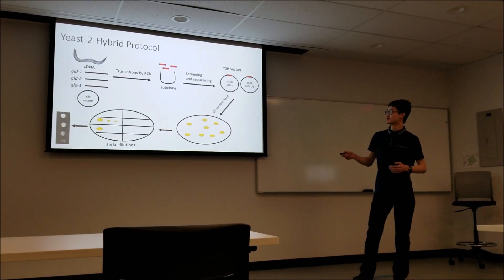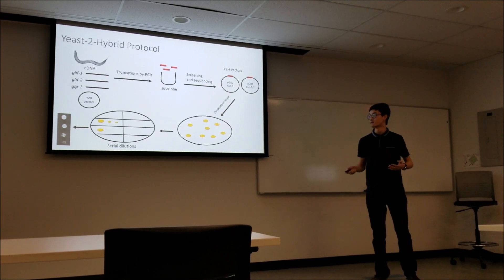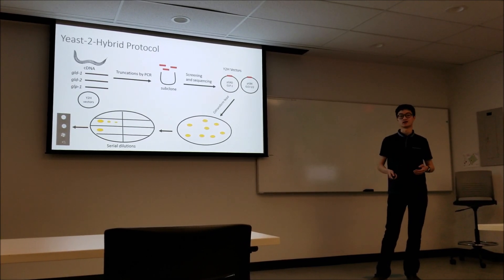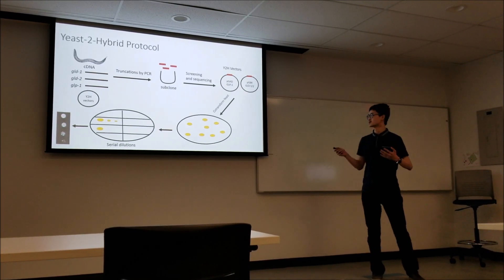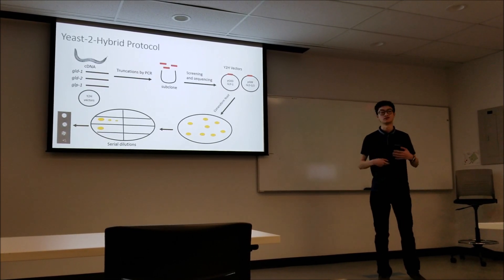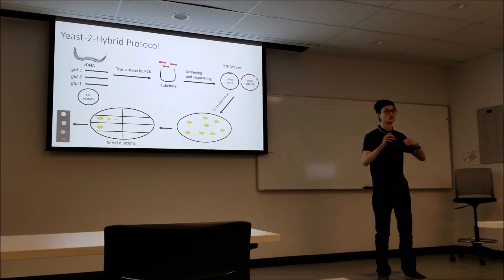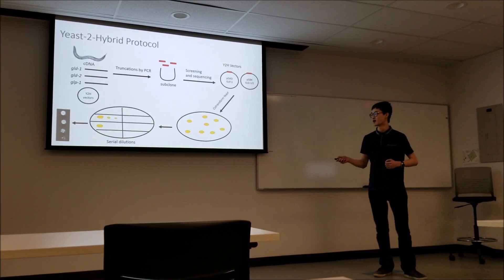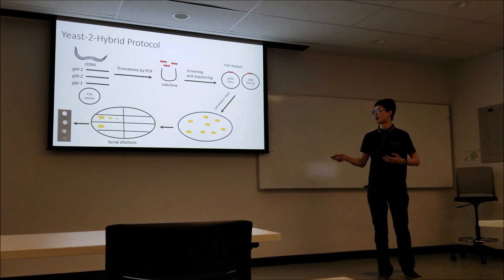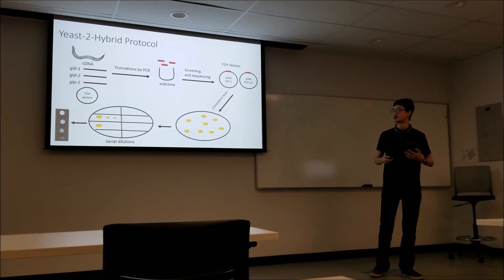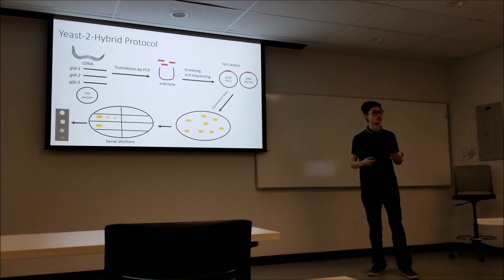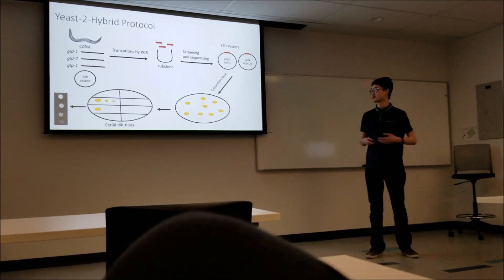Here's the protocol I followed. I have the genes from the worm, the three genes I'm looking at. I truncate them by PCR, then clone them into the yeast-2-hybrid vectors, then transform the yeast with those vectors. The yeast are now able to express my two proteins of interest. I spot the yeast onto selection plates, and as an added step I also do different dilutions of yeast just to try to gauge how strong of an interaction there is.